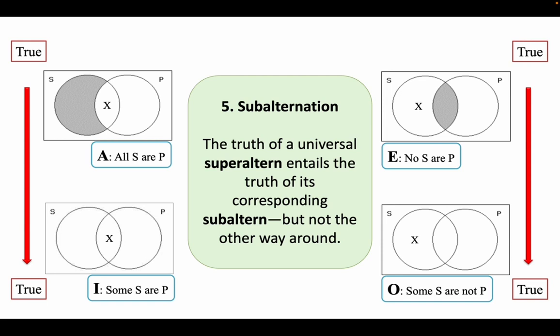But not the other way around. If you have some bananas — not all bananas in the world, but just some — you go to the store, buy some bananas, and they are yellow, can you infer that all bananas in the world are yellow? Obviously not. So truth goes down, but it doesn't go up. Similarly, this applies to the E form and the O form.